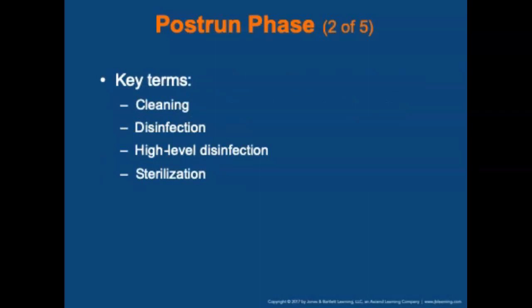There are key terms to understand regarding decontamination. Cleaning is the process of removing dirt, dust, blood, or other visible contaminants from the surface of equipment. Disinfection is the killing of pathogenic agents by directly applying a chemical made for that purpose. High-level disinfection is the killing of pathogenic agents by the use of potent means of disinfection. Sterilization is a process, such as use of heat, that removes all microbial contamination.